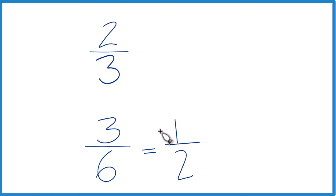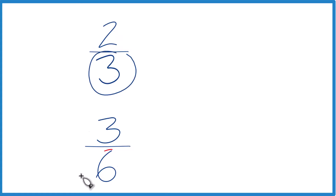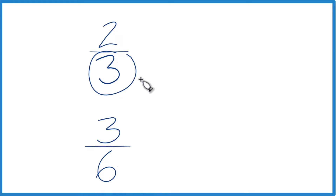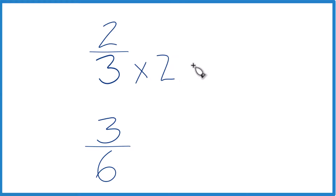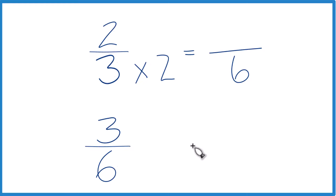So you could probably just reason this out. Another way you could do it is find a common denominator — something that three and six go into evenly — and then just compare the numerators. Let's give that a try. Three times two equals six, and down here we already have six, so we'll just keep that the same.